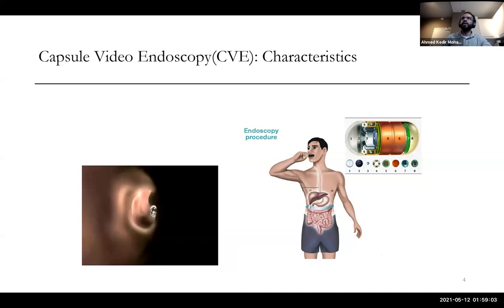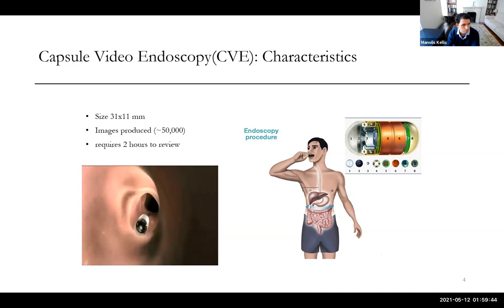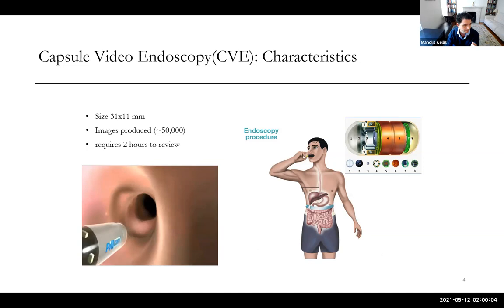A capsule is a small pill-size camera, 31 by 11 millimeters. It has a CMOS sensor, a battery, and an antenna transmitter. The patient wears a vest and the images are transmitted through that vest medically. It produces a large amount of frames, around 50,000. A question from the audience: one advantage of traditional colonoscopy is that you empty the colon so you can actually see polyps. The same colon cleaning procedure is done for both colonoscopy and capsule video endoscopy.